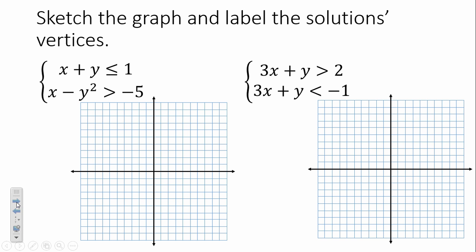Sketch the graph and label the solution's vertices. The first inequality is linear — get y by itself: y is less than or equal to negative x plus 1. Starting at y-intercept 1, falling 1, running 1. Solid or dashed? Solid.